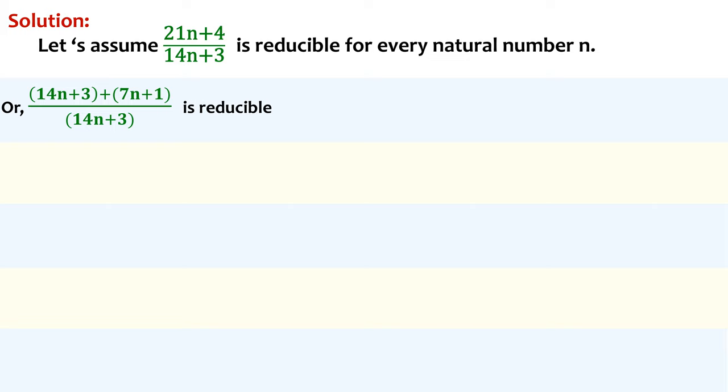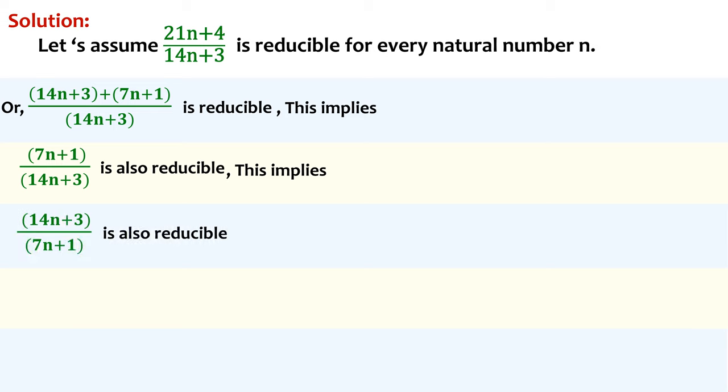Remember how we said, if (a + b)/b is reducible, a/b is also reducible. Therefore, (7n + 1)/(14n + 3) is reducible. We also said, if a/b is reducible, b/a is also reducible. Therefore, (14n + 3)/(7n + 1) is also reducible.